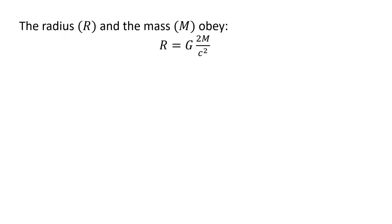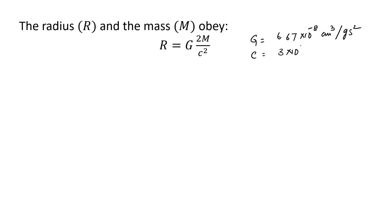The radius and mass of black holes obey the relation R = 2GM/c², where G is the gravitational constant equal to 6.67 × 10⁻⁸ cm³/g·s², and C is the speed of light equal to 3 × 10¹⁰ cm/s. Those are the values describing the radius-mass relationship of a black hole.